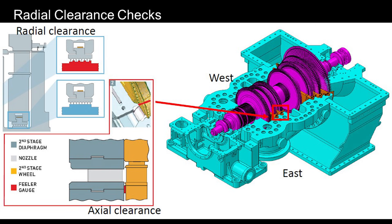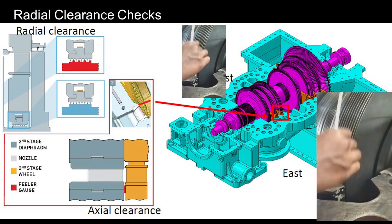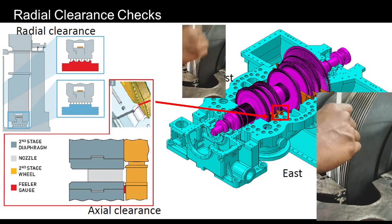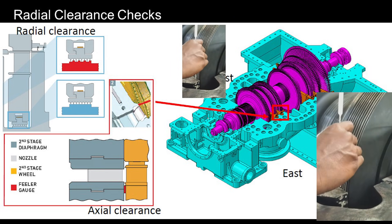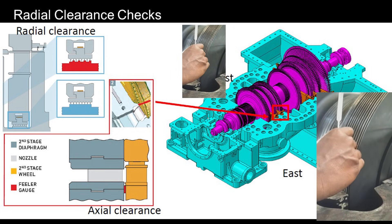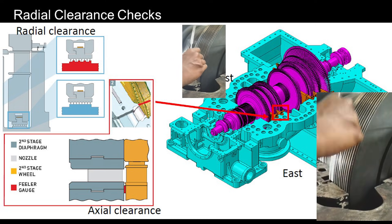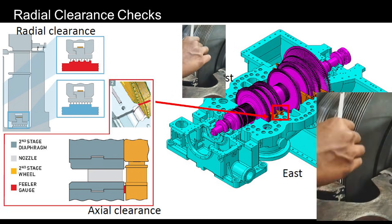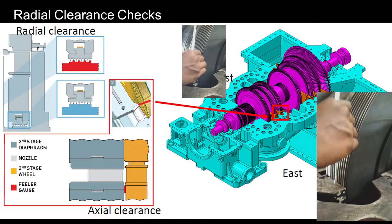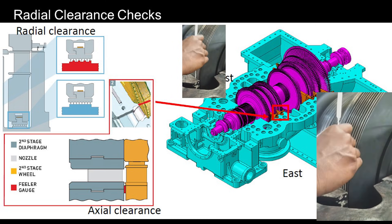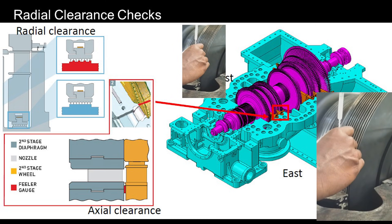Once the shaft is placed on the bearings, the next step is to perform radial clearance checks. This is a vital process to ensure all components are properly aligned and to check there's enough clearance to prevent interference during operation.